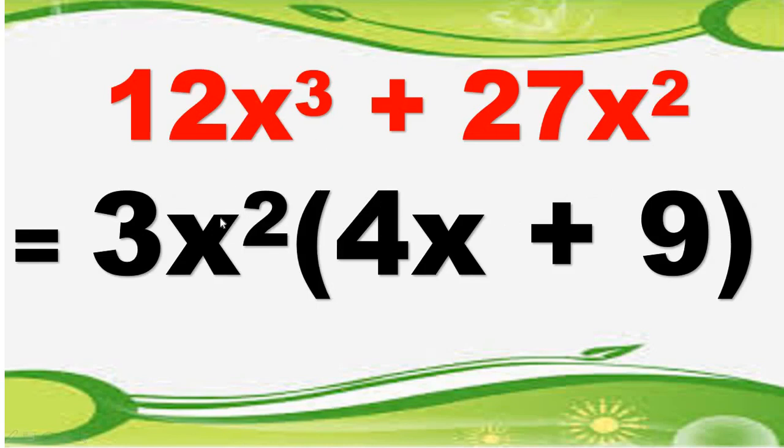So next step is you are going to factor out the greatest common factor. Our GCF is 3x squared and that will be multiplied by the sum of the other factors. The first factor on the other factor is 4x and the second one is 9. So the factors of 12x cubed plus 27x squared are 3x squared and 4x plus 9.